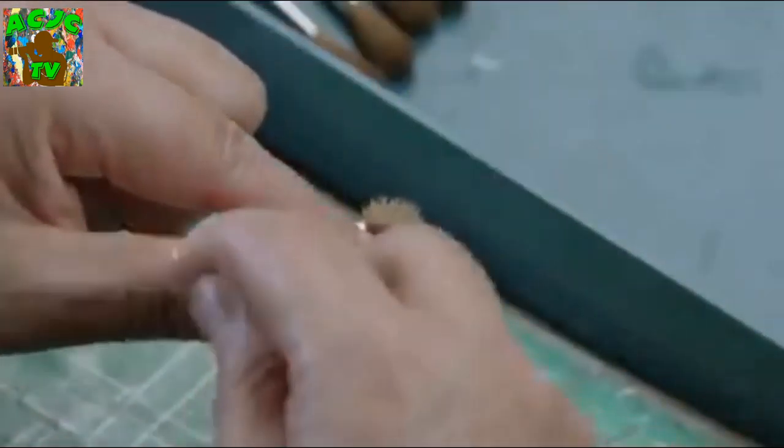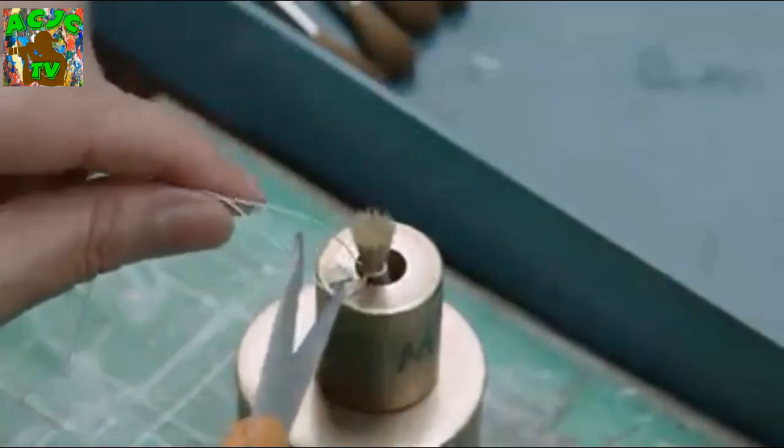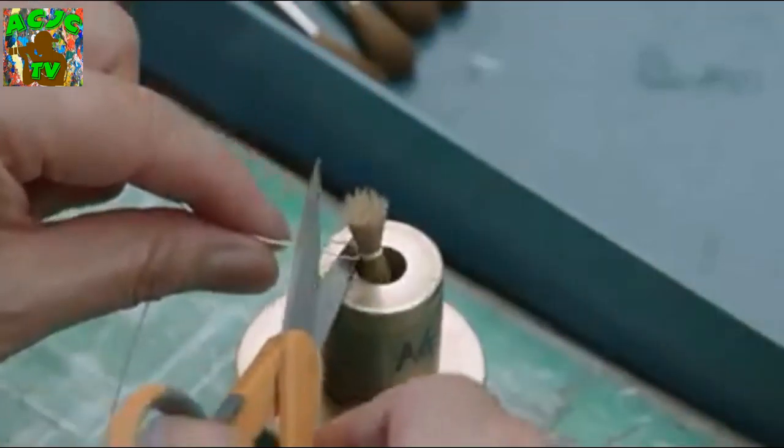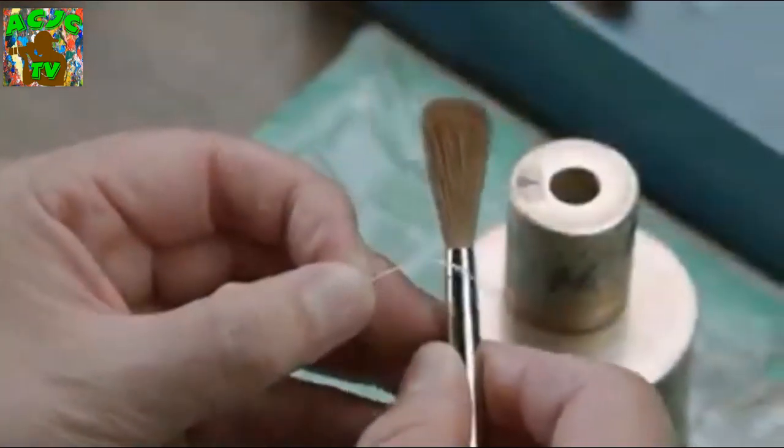She ties the roots of the hairs together with string, then removes them from the mold. She inserts the brush head back into the ferrule, then removes the string.